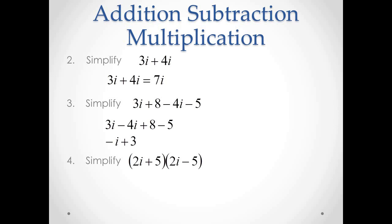For number 4, we have to find the product of the quantity 2i plus 5 times the quantity 2i minus 5. Remember the special products we had in algebra, where we can have the product of the sum and difference of two quantities as the square of the first term minus the square of the second term. Here we will have the square of 2i minus the square of 5. And when we simplify this, we can have 4i squared minus 25. Simplifying further, where i squared equals negative 1, we will have negative 4 minus 25. And our final answer will be negative 29.